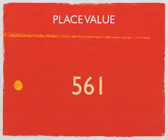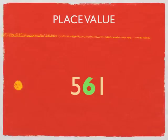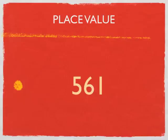Our first number for today is 561, so let's go ahead and take a look at the basic place value here. If we start over here on the far right, we are in the ones spot, and the number we find in the ones spot is the number one. Over in the tens spot, right in the middle, we find the number six. And finally, we have the hundreds spot, where we find the number five. If we put it all together, we have the number 561.